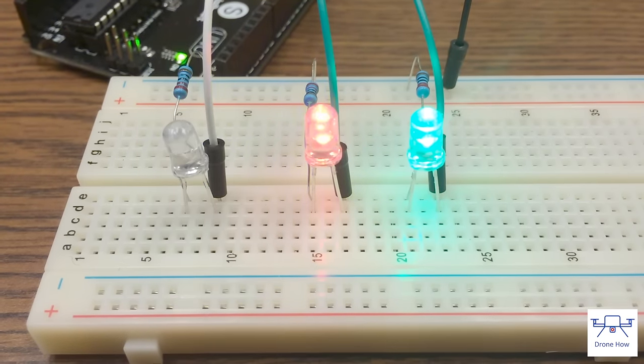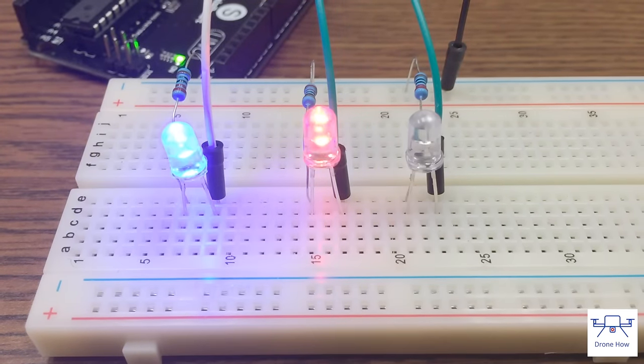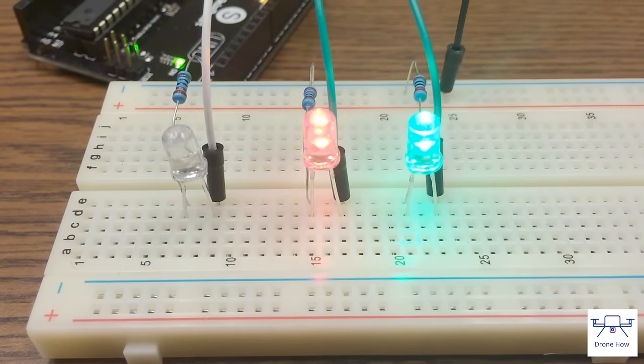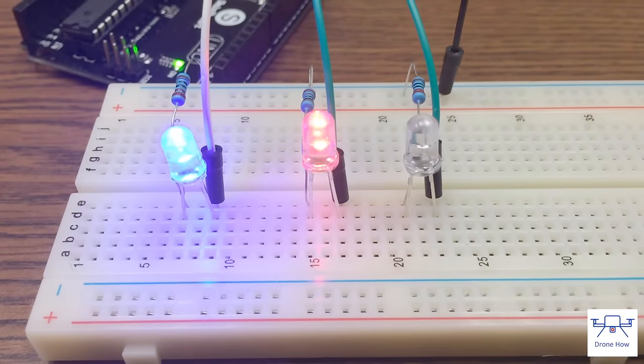Today I'm going to show you guys a very simple Arduino project for beginners. We're going to get three different LEDs to turn on and turn off in a simple sequence, like you see here.